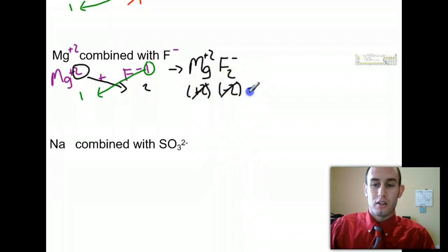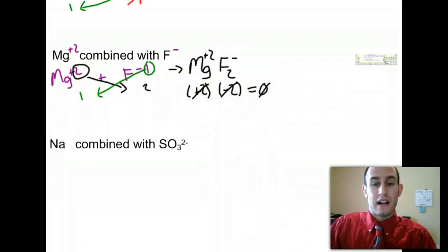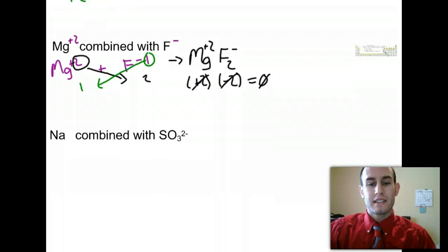plus two, minus two, balance out to zero. And that's what we want every time. It's a balanced compound. One last example here.